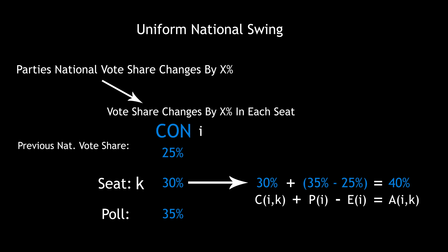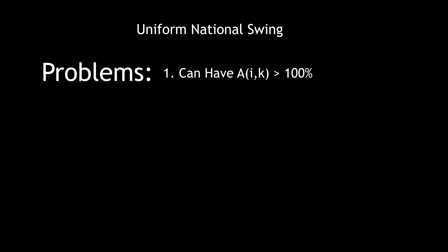When the UNS model works, it has been quite successful at making predictions, but it has two big problems. The predicted vote share A is capable of being greater than 100% and less than 0%. The transition model aims to improve on this based on two principles.